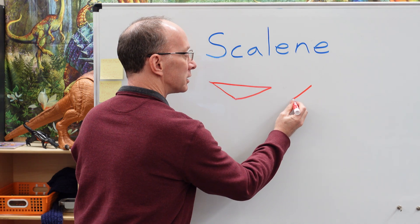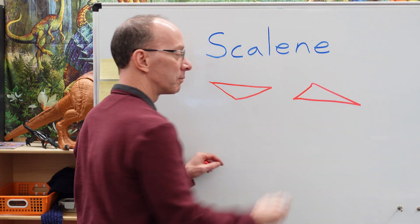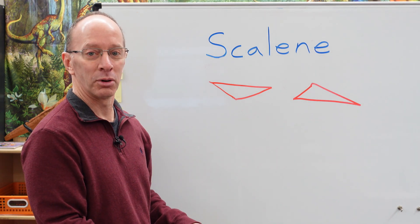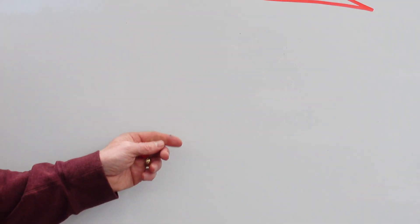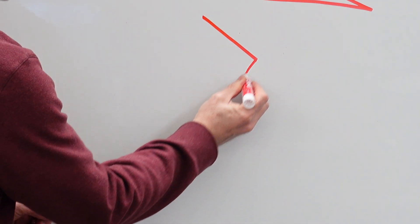Maybe we'll have another line slanted like this, another longer line, and one like that. Another example of a scalene triangle. And then we'll do one more example of what a scalene triangle looks like.